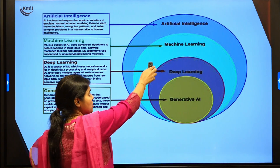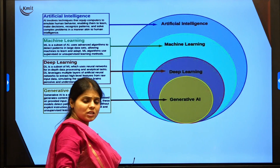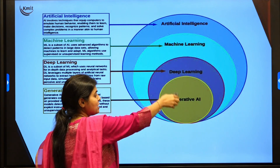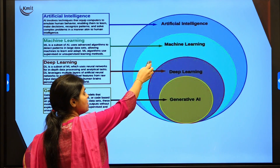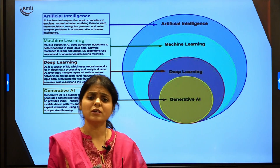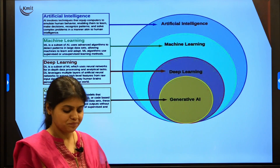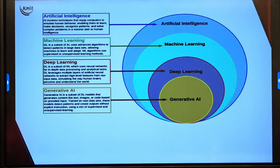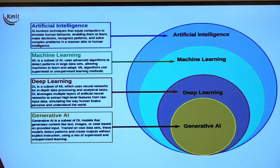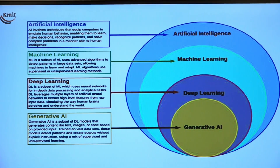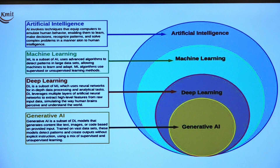Looking at the entire AI picture: AI is the big field, machine learning is a subfield of AI, and deep learning is a subfield of machine learning. These days we hear a lot about generative AI — generative AI is again a subset of deep learning. In this subject we will focus on machine learning throughout five units. AI equips computers to emulate human behavior; machine learning gives machines ability to learn; deep learning involves neural networks for in-depth data processing; and generative AI deals with generating images, text, and advanced applications like ChatGPT.